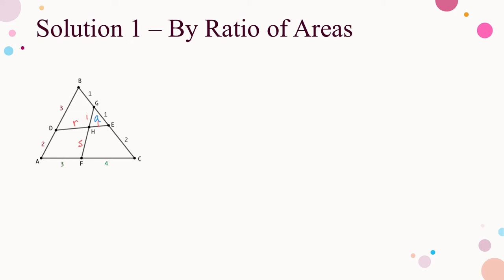Join DG, EF, and DF. Then area of DHG is RA, area of EHF is SA, area of DHF is RSA. By the ratio BG to GE, which is 1 to 1, area of DBG is (1 + R) times A.